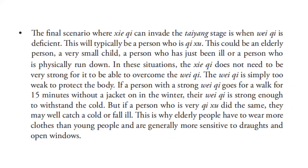The final scenario where pathogenic qi can invade the Taiyang stage is when Wei Qi is deficient. This will typically be a person whose qi is deficient — an elderly person, a very small child, a person who has just been ill, or a person who is physically run down. In this situation, the pathogenic qi does not need to be very strong to overcome the Wei Qi. If a person with a strong Wei Qi goes for a walk for fifteen minutes without a jacket in the winter, their Wei Qi is strong enough to withstand the cold. But if a person who is very qi deficient did the same, they may well catch a cold. This is why elderly people have to wear more clothes than young people and are generally more sensitive to draughts and open windows.